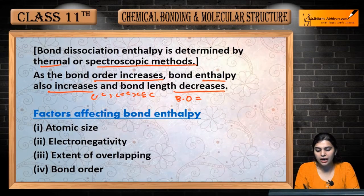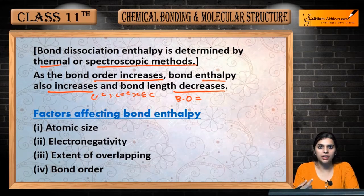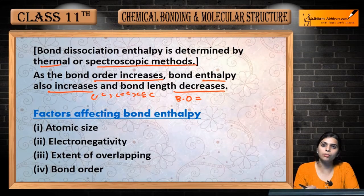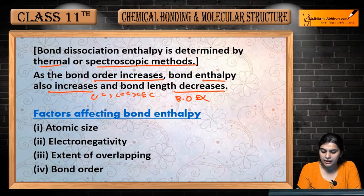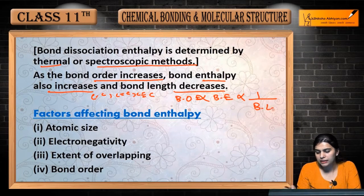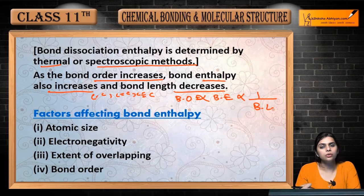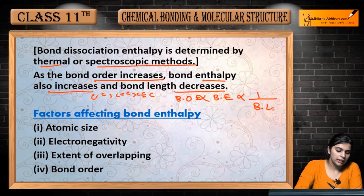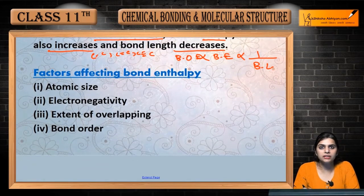And bond length decreases — humari jo bond length hai woh decrease hoti hai. Yeh order aapko yaad rakhna hai, aapko direct questions puchhe ja sakte hain ki bond order kaise increase hota hai. Bond order is directly proportional to bond enthalpy — jitna zyada bond order utni zyada bond enthalpy — and inversely proportional to bond length — jitna zyada bond order utni kam bond length.